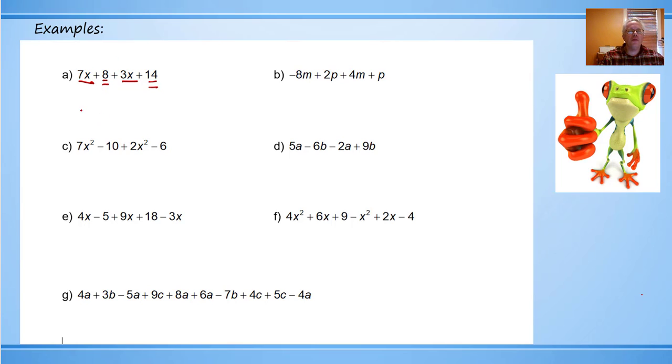Alright, so we're going to combine the like terms. We have seven X's and we're adding three more. That would make 10X. We have an eight and a fourteen. Those are two number terms. We can add them to get 22 and that's what we get when we combine like terms. The original one had four terms. This one only has two things. It's a little simpler.